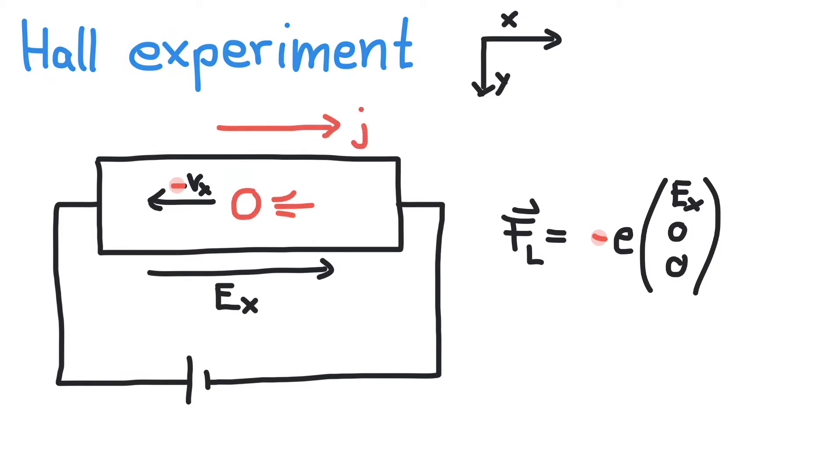Nevertheless, the current flows towards the positive x-direction. This is a consequence of the sign convention of a current, as I am sure you are aware of.